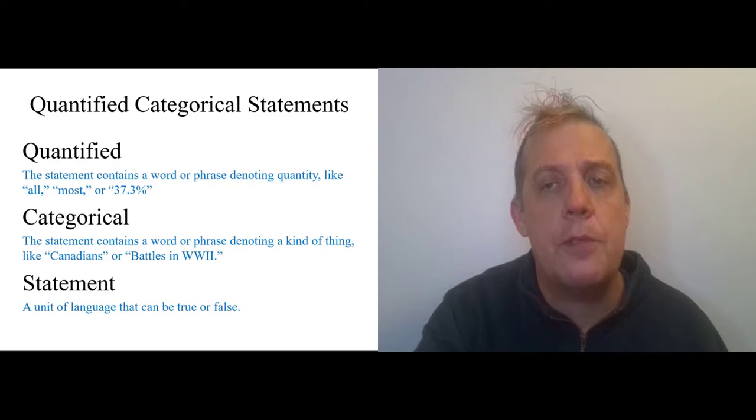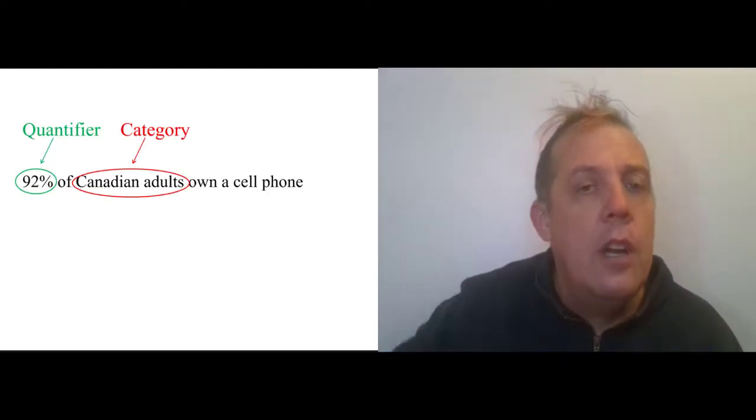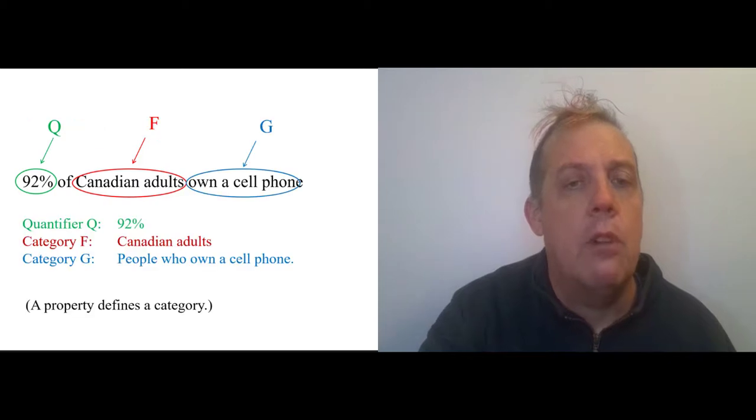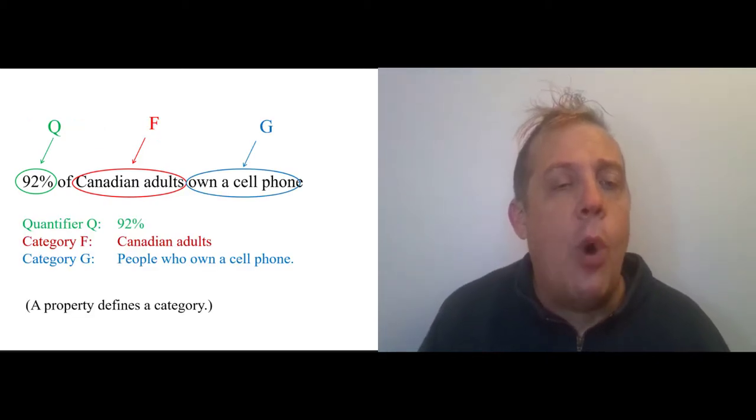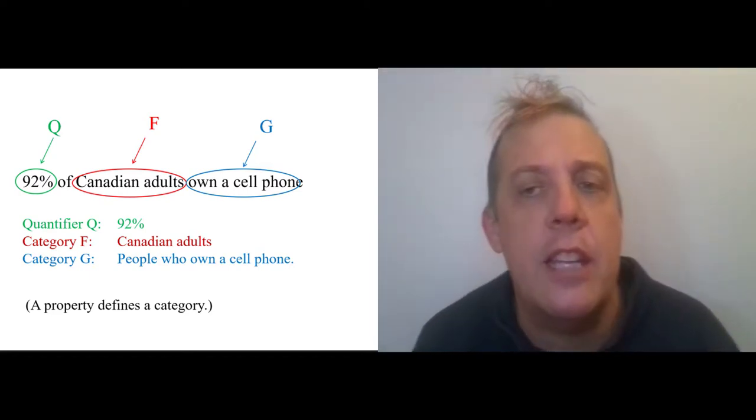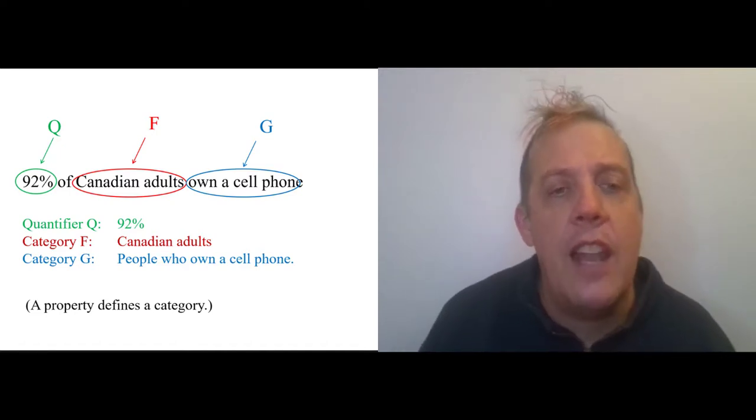Think about this statement: 92% of Canadian adults own a cell phone. It's got a quantifier, 92%, and then two categories we're going to call F and G. These are Canadian adults and people who own a cell phone. A property and a category, for our purposes, are going to be the same. Any quantified categorical statement contains a Q, an F, and a G.